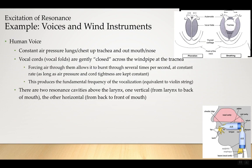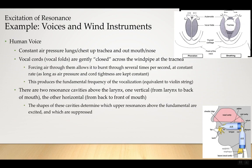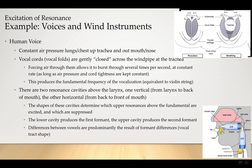The lower cavity produces the first formant and the upper cavity produces the second formant. The differences between vowels like 'a,' 'e,' 'ee' are predominantly the result of different formant differences — different vocal tract shapes.